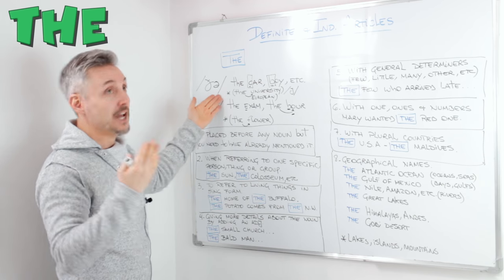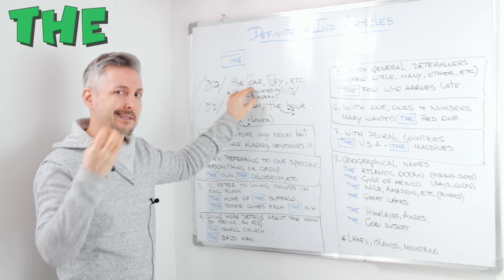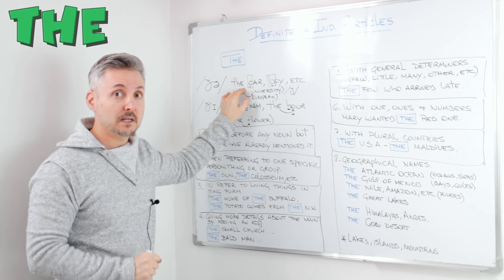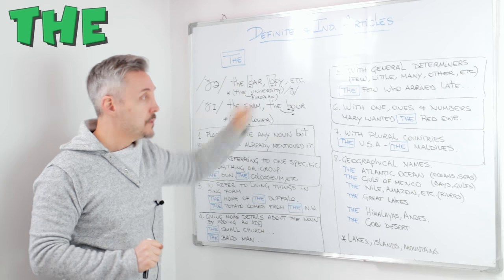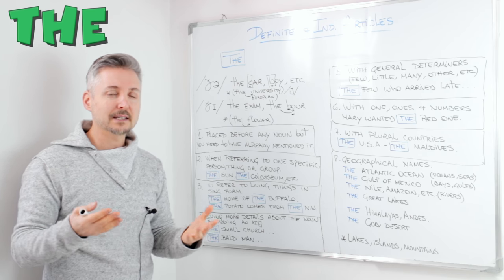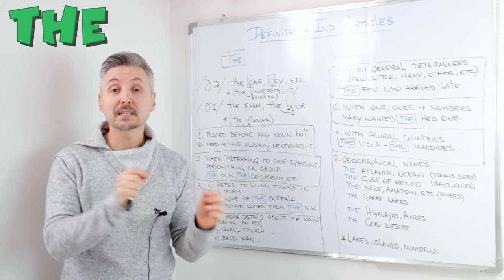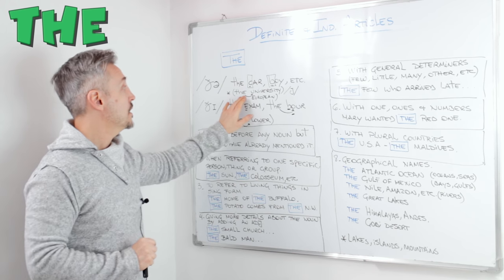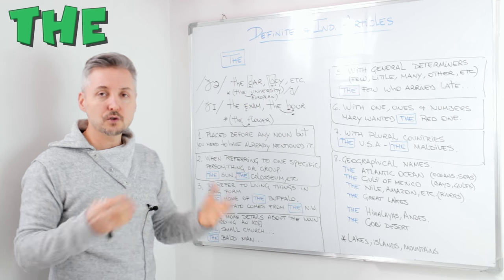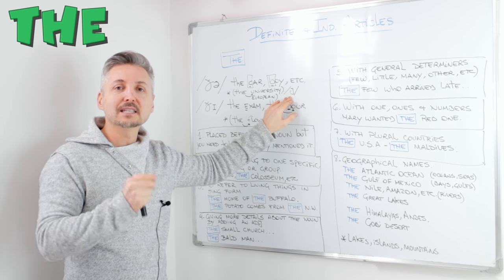We use 'the' and we pronounce 'the' with consonant sounds — and not consonant letters, what do I mean by that? Let's look at 'car' — it's a consonant sound, so 'the car', 'the boy', etc. Consonant sounds and not consonant letters. Let's take an example of a word that starts with a vowel but is pronounced with a consonant sound: 'the university', 'the European Union'. These two start with the sound 'yi', which is a consonant sound.